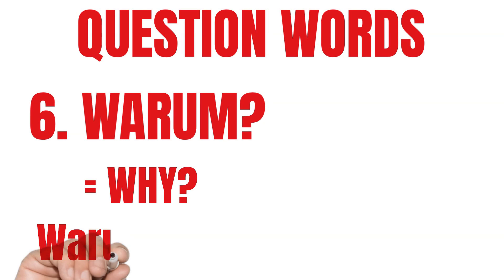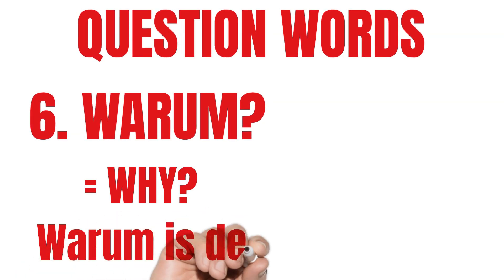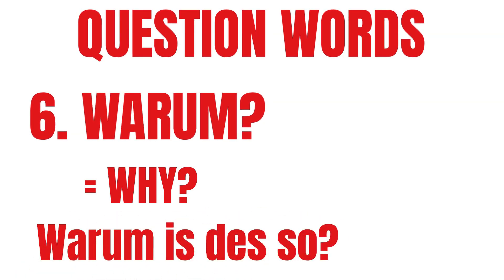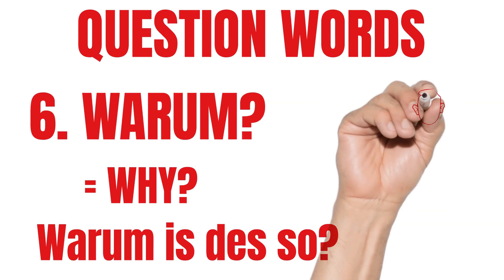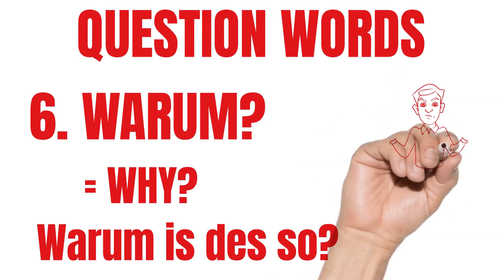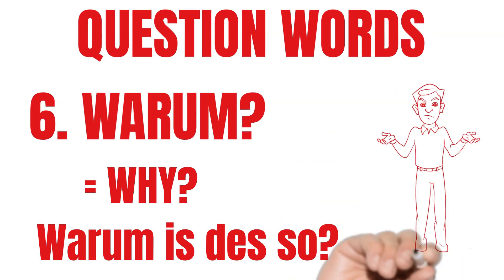Warum is "why" in English. For example, "Warum ist dies so?" in Austrian German. In standard German: "Warum ist das so?" In English: "Why is that the case?" Warum is why.